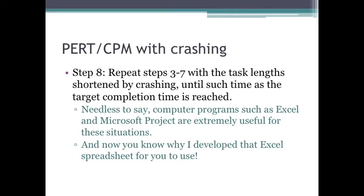Step eight: you repeat steps three through seven. In other words, you go through the PERT/CPM process all over again, figure out the list of tasks that can be crashed and any combination of tasks that might need to be crashed. You repeat that over and over again until you reach your target completion time.